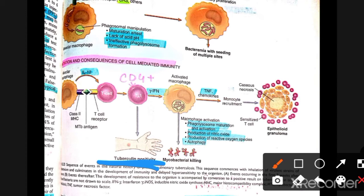CD4-positive cells are responsible for the skin induration in the tuberculin test. If the patient is HIV-positive, diabetic, on steroids, or otherwise immunocompromised, there will not be sufficient CD4-positive T cells, and the skin test will be negative.